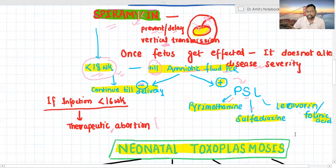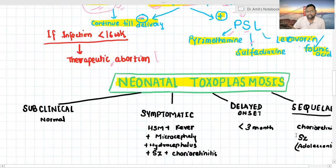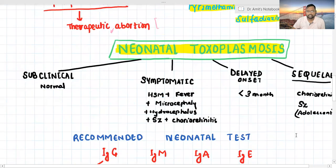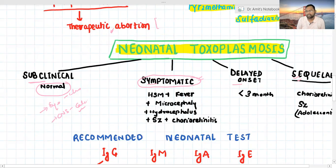Now mother reaches third trimester and baby is delivered. What are the presentations in neonate? We have subclinical infection, symptomatic, and delayed onset or sequelae or relapse. Subclinical is the child delivered normally, but if you go for eye examination or CNS examination, you may get chorioretinitis or calcification or some other abnormality. The child usually comes with symptomatic cases. Neonate presents with hepatosplenomegaly, fever, microcephaly, hydrocephalus, seizure, chorioretinitis. These are the presentations of all the TORCH infections.